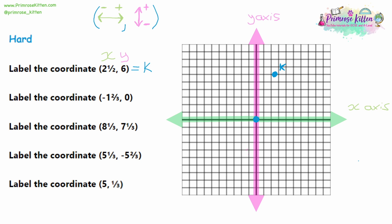For question 2, we have negative one and two thirds for x — it's negative, so we're going to the left. And we have zero for the y-axis, so we don't need to move on the y-axis at all. We go one place to the left, then two thirds of a space further — not quite in the middle, a little bit after it — and then zero up. That's coordinate L. Note that O represents zero, zero — it stands for origin — so I won't use O as a label letter for coordinates.